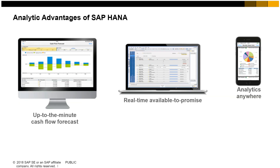SAP HANA can be a game-changer for a business. It lies underneath the application to make it possible to analyze large amounts of data in real-time. So instead of running a report and waiting for results, the calculation is done instantly regardless of the amount of data involved, giving you immediate results and empowering employees to take action. Unlike ERP systems of the past, SAP HANA's power to crunch through data makes it easier for users to search for and find what they need using a Google-like freestyle search, reducing the need to remember product or customer numbers.